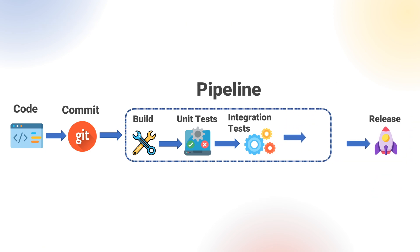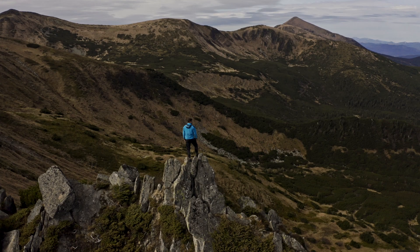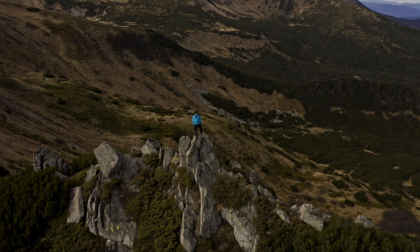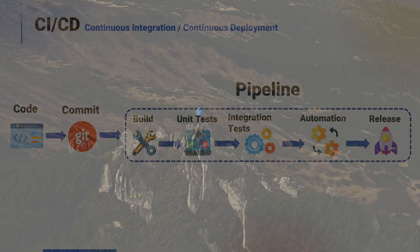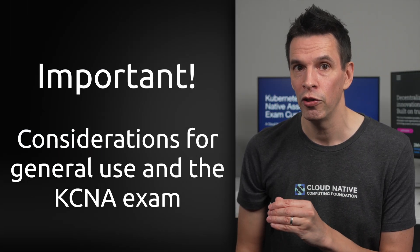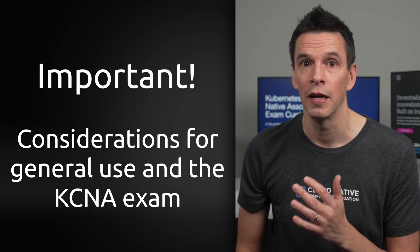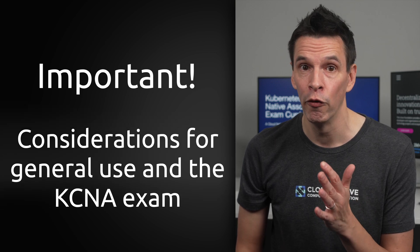An alternative and less common definition for the CD aspect in CI/CD is continuous deployment, and this is considered by many as the pinnacle of success. Whereas continuous delivery would require an initiation by a human, continuous deployment is a practice where changes are continuously deployed and released into a production environment. It's important when considering this approach that there should also be a further emphasis on the ability to test in production, as well as things like automated rollback procedures for production.